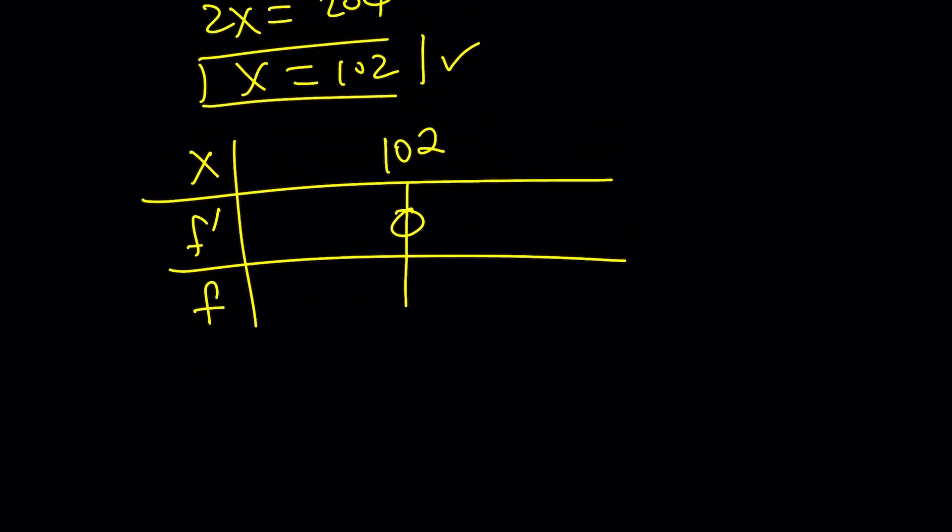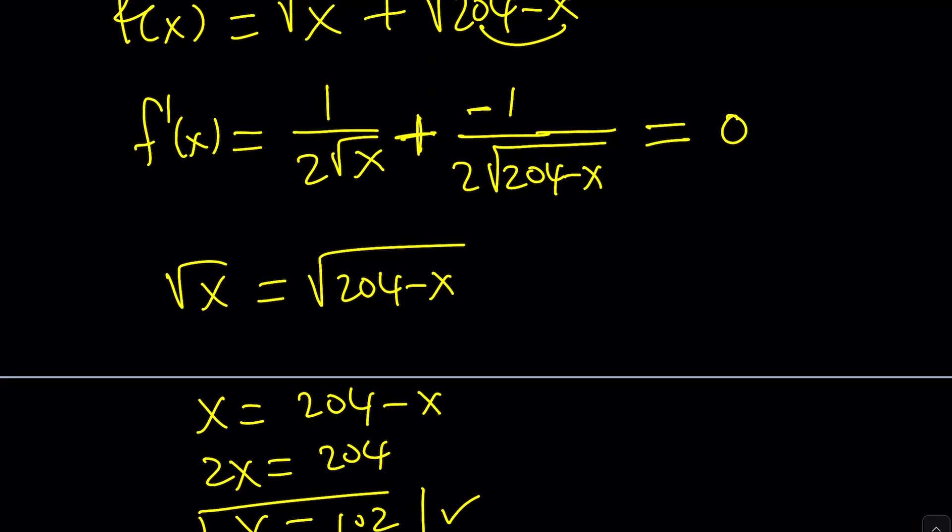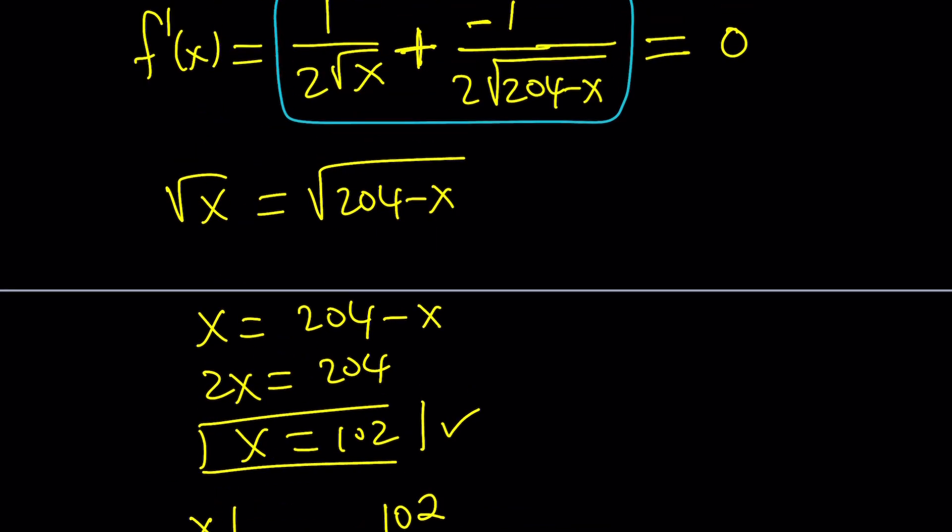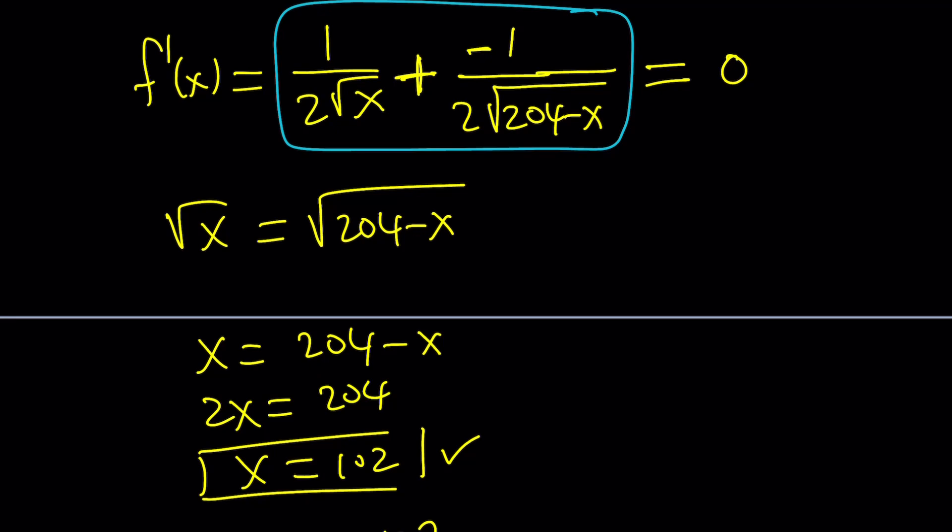Now we're going to look at the behavior of the function, or the derivative function, to the right and to the left of 102. To understand how that function behaves, you have to look at the derivative without setting it equal to zero. So what happens, for example, at one? One is to the left of 102, so I can use it as a test value. If x equals one...